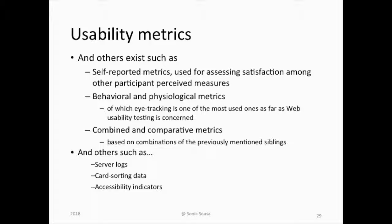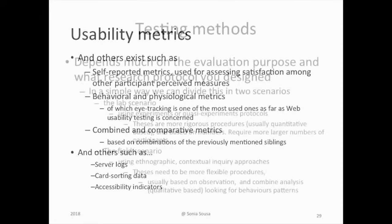As additional metrics, there are self-report metrics, which usually help to assess the satisfaction of the user. We also have behavioral and psychological metrics using tools like eye tracking, which we will learn in the next session. Or we can compare and combine designs using what we call A/B testing.